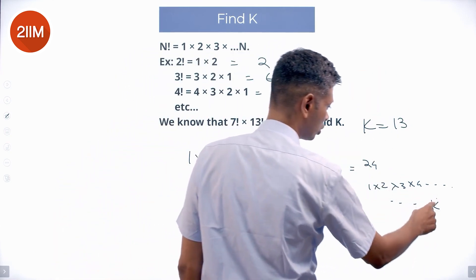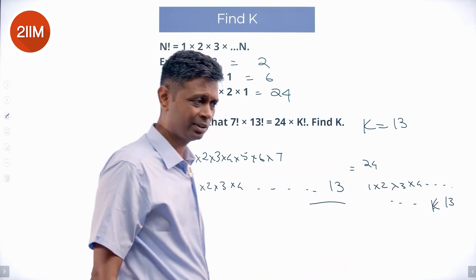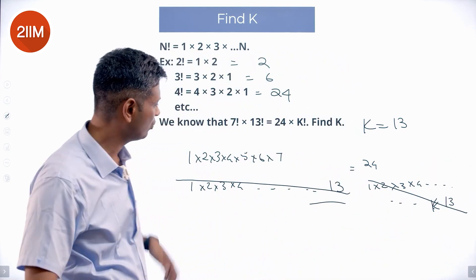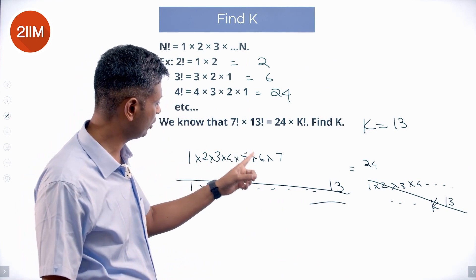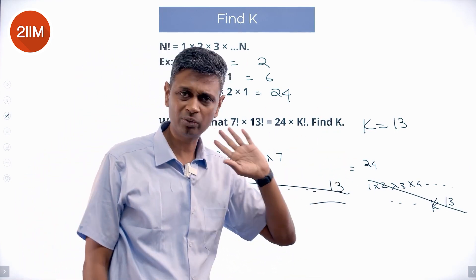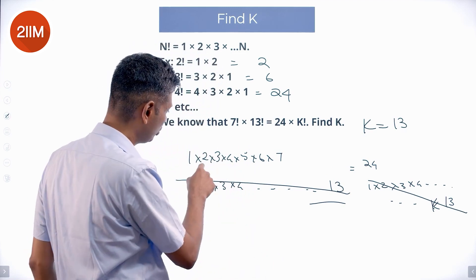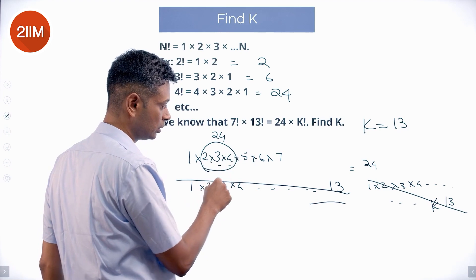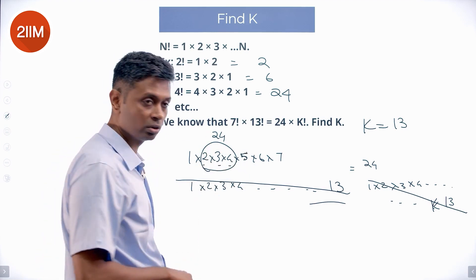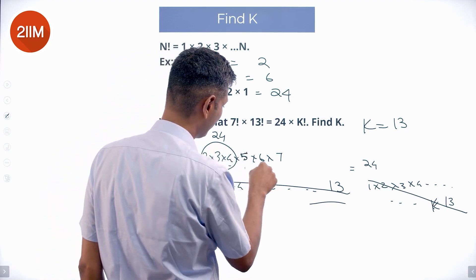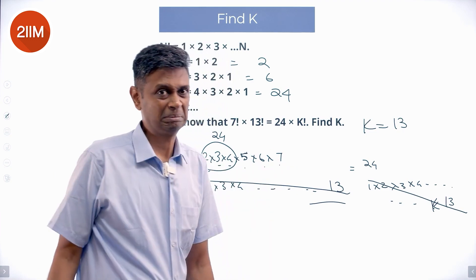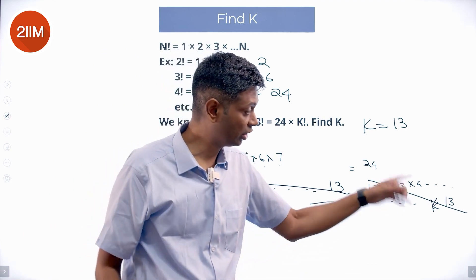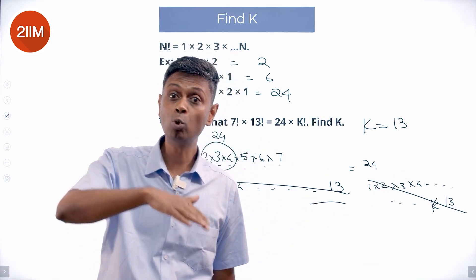With k equal to 13, the k factorial side is 1 × 2 × 3 × 4 all the way to 13. This whole thing will get cancelled with the 13 factorial. What remains on the left is 1 × 2 × 3 × 4 × 5 × 6 × 7, and this side is just 24. But 2 × 3 × 4 alone is already 24, and we still have 5, 6, 7 remaining — a very large number versus a very small one. So k is not 13 either; k should be more than 13.